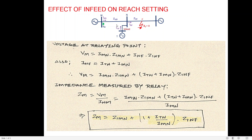ZMN is the total impedance of the transmission line from bus M to bus N. ZNF is the impedance from bus N to the fault point F. In this video we are not considering any fault resistance — that will be studied in another session. Source T feeds the infeed current ITN, and we will look at the effect of this infeed on the reach settings of the various zones.